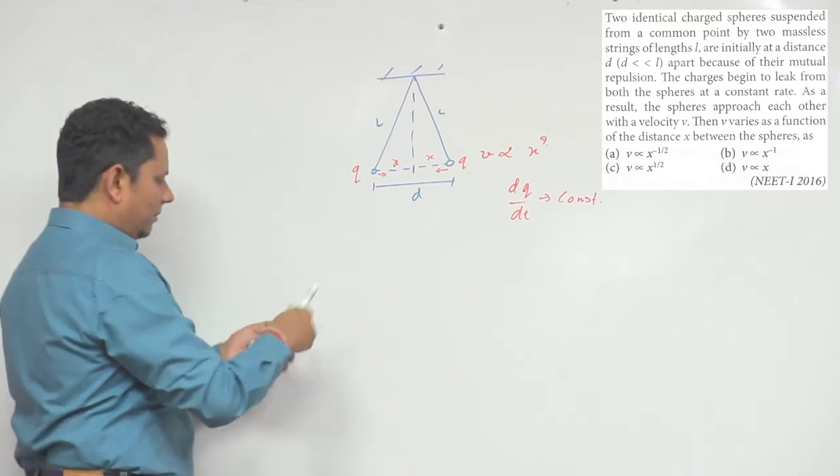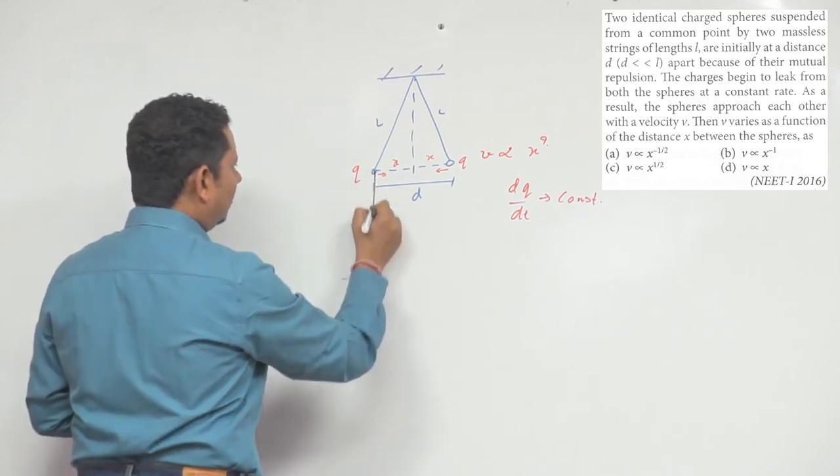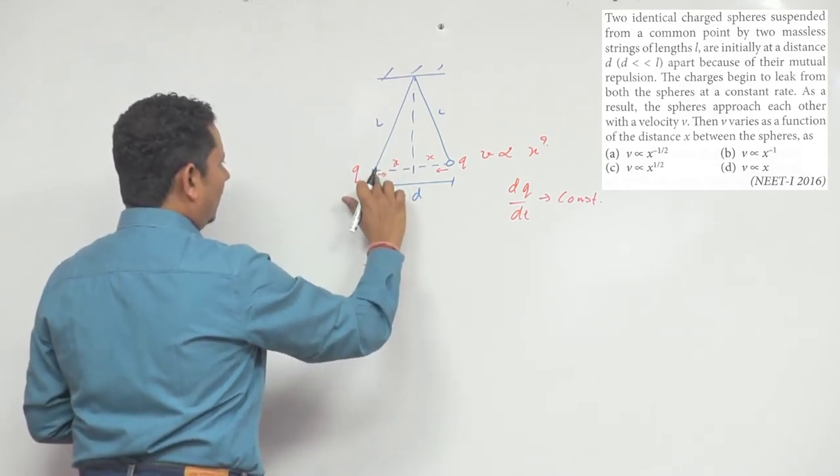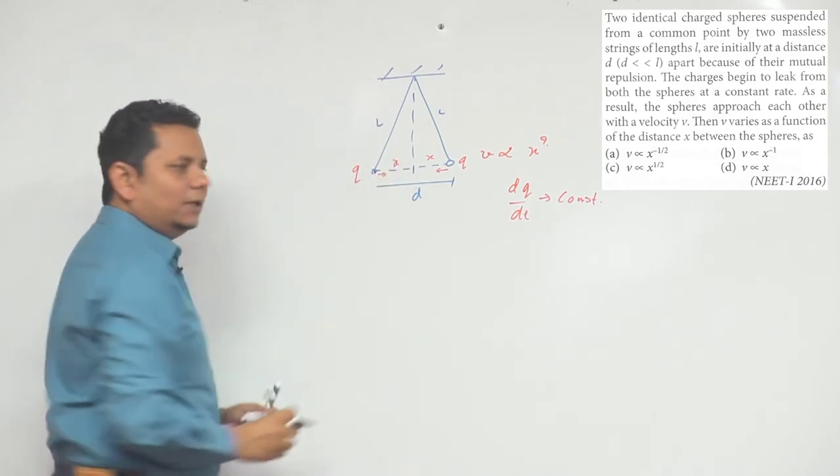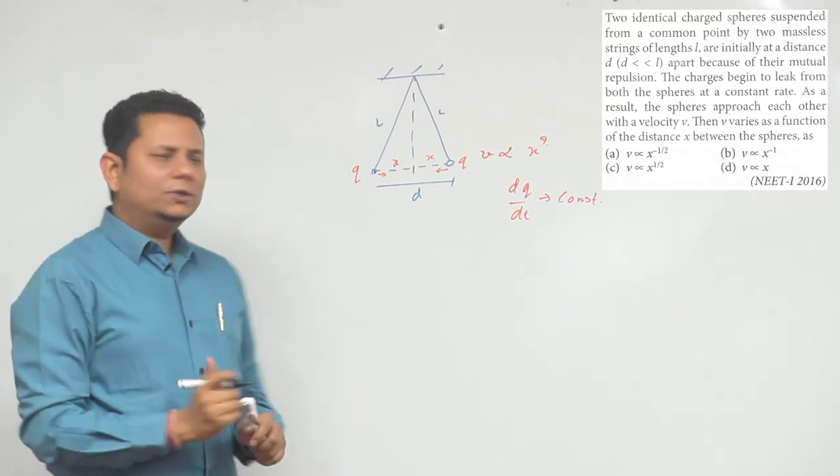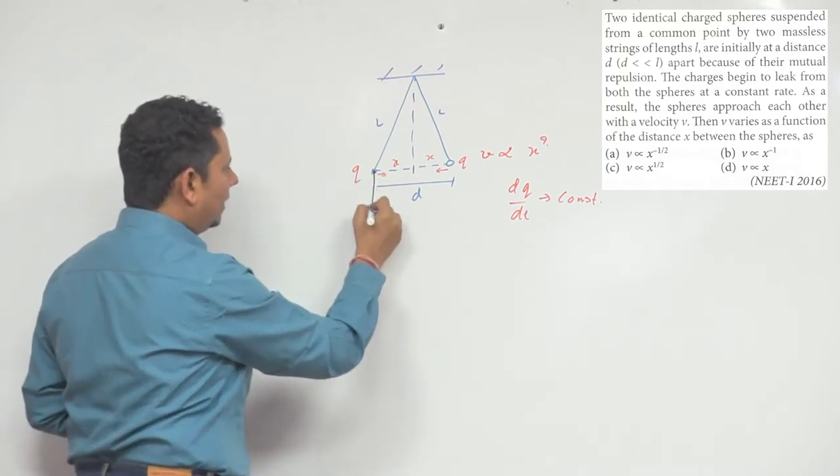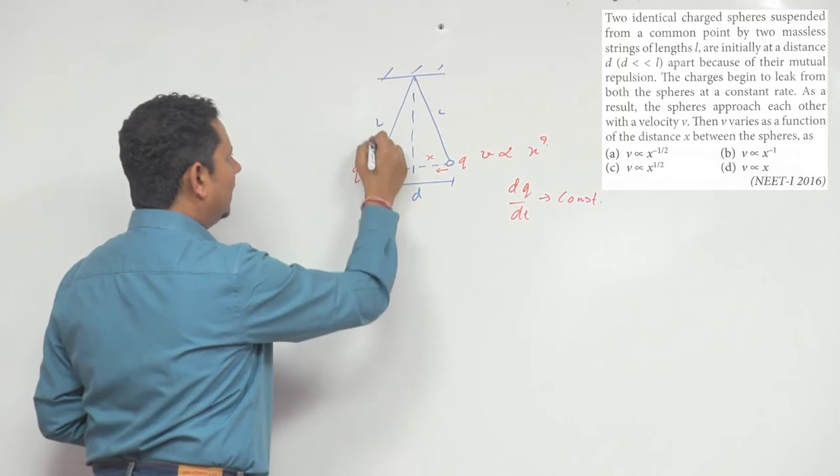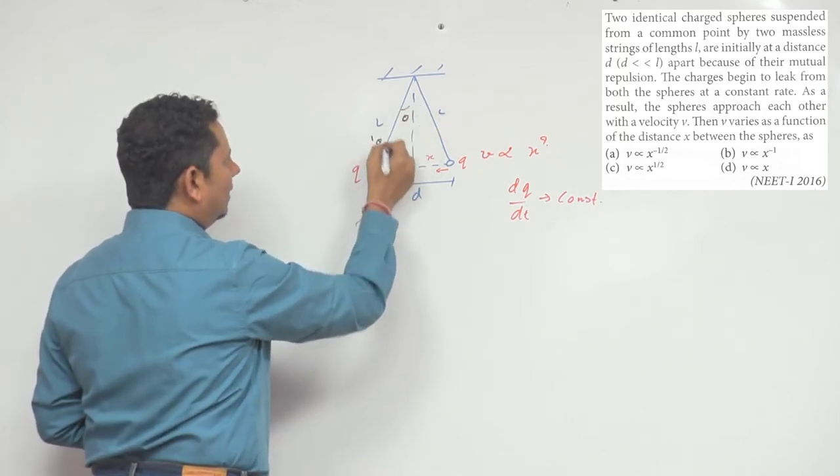Now again in this question, we need to write equations using NLM concepts. So first, in this case we can write, for these two charges, the forces acting on them - if you draw the FBD, the force downward will be mg.